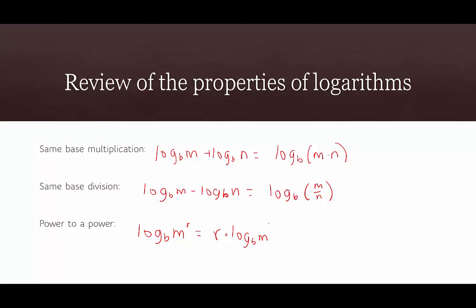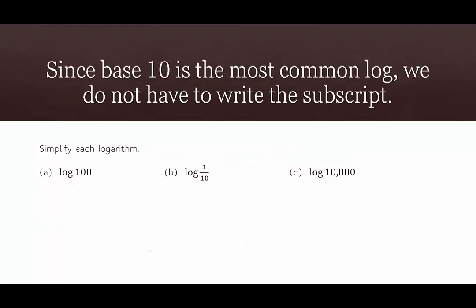Something else we should know are some identities. If we have log base b of b, that simplifies to 1, because b to what power is b — the answer is 1. And if we have log base b of 1, that simplifies to 0, because b to what power equals 1 is b to the power of 0. Now let's look at some examples.